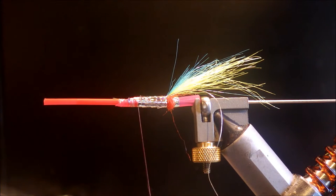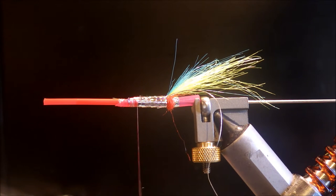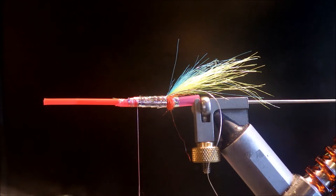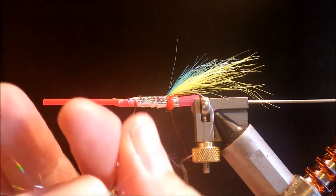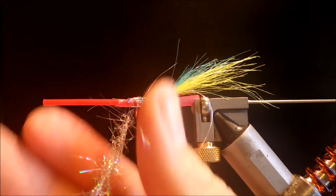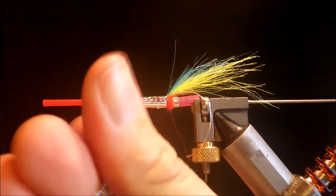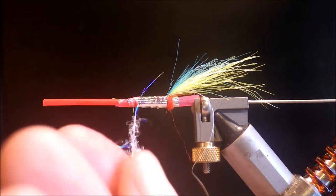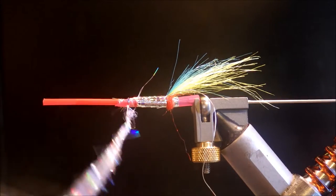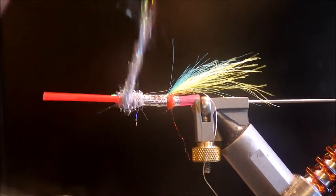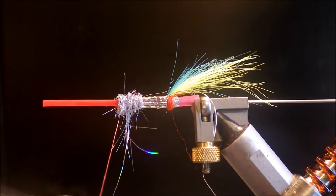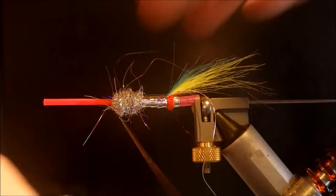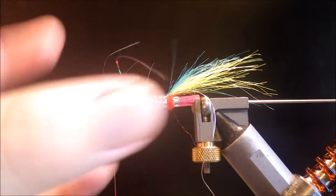For the front half I'm using some silver holographic ice dub. Don't be shy with your dubbing because this will be getting brushed out. It's got a lovely effect once it's brushed out, but make sure you've got enough on to brush out well. I want a bit more than that. It should look huge at this stage.